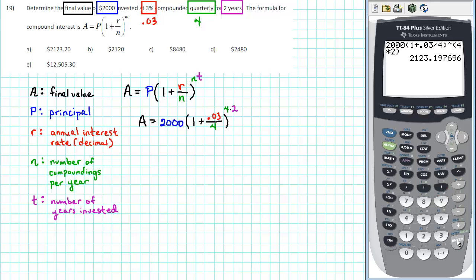It comes out to be $2,123.20 rounded to the nearest cent. Therefore, A is the correct answer.